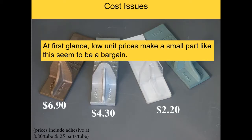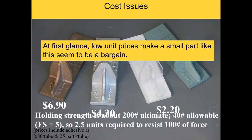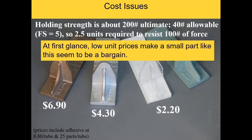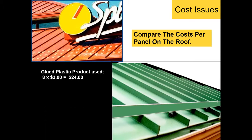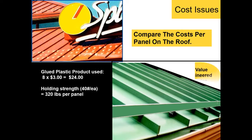Cost issues: at first glance these look like bargain prices — until you do the holding strength evaluation. We find that this part has a 200-pound ultimate load and a 40-pound allowable load, because the factor of safety is five. Why? Because it's an unreliable bond. That's why a higher factor of safety is used. This glued-on part sells for three dollars; there are eight per panel — that's $24 per panel — with 40-pound allowable holding strength, giving 320 pounds per panel of allowable holding strength.